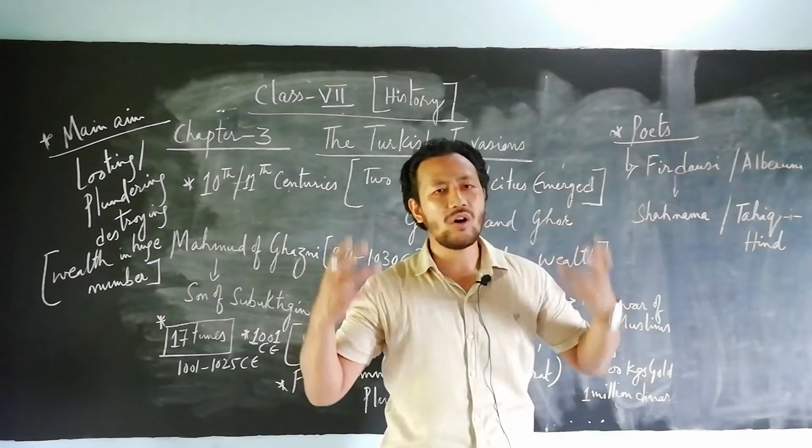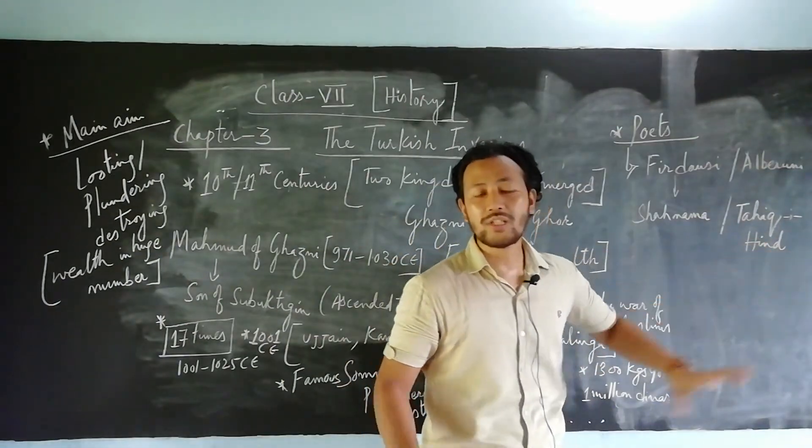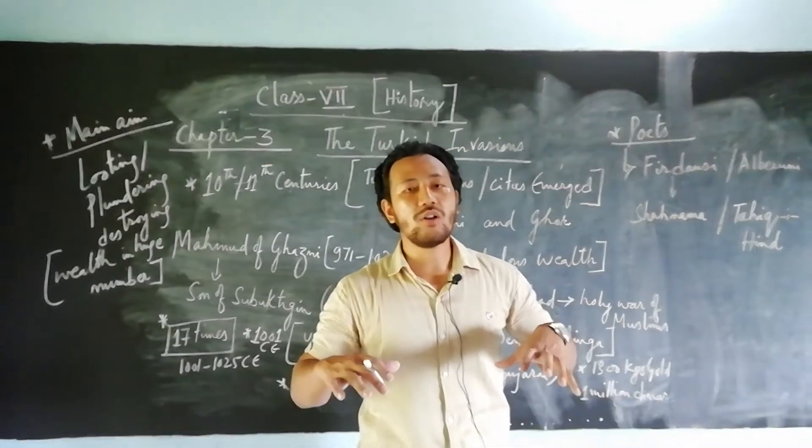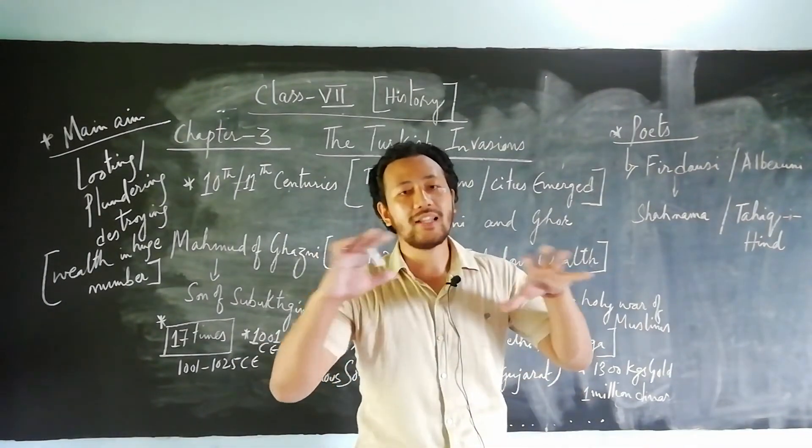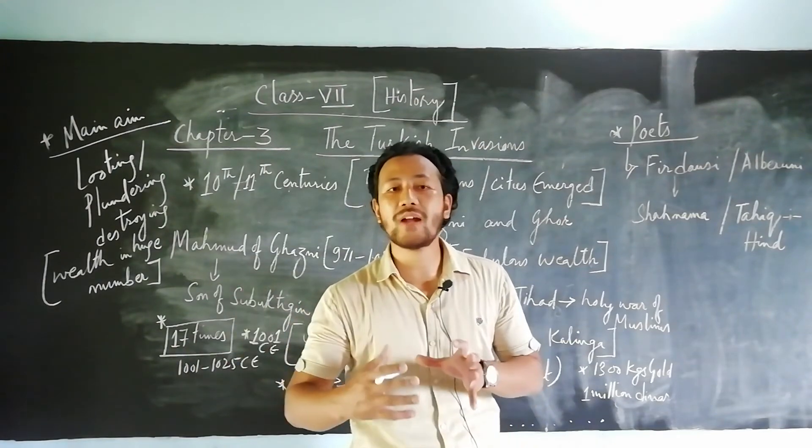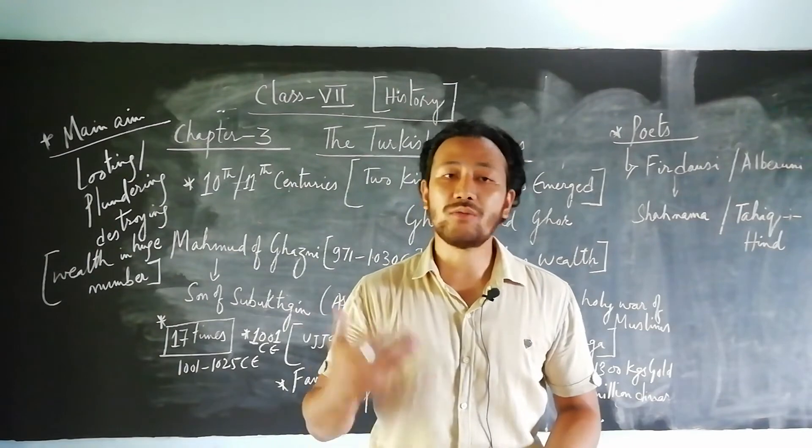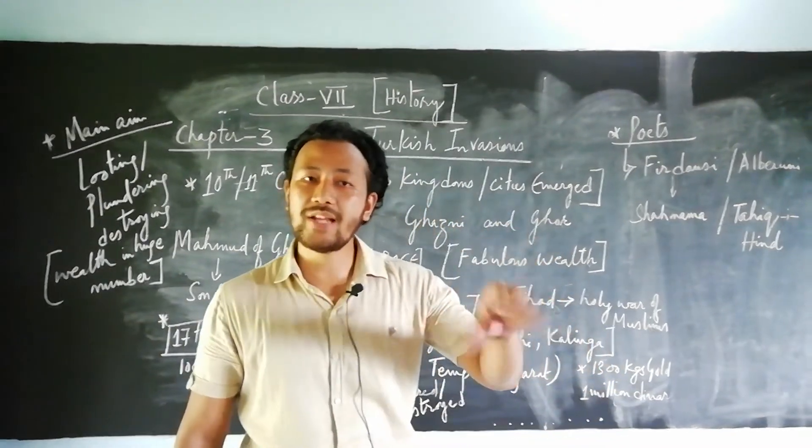The next poet was Al-Biruni, who was also one of the great poets with lots of knowledge, an intellectual person. He wrote Tarikh-i-Hind, which mainly focuses on the culture and lifestyle, describing how Mohammed of Ghazni had a lot of impact on the Indian subcontinent, its states, cities, and towns.